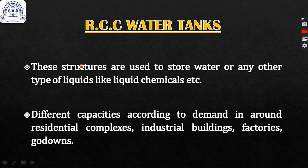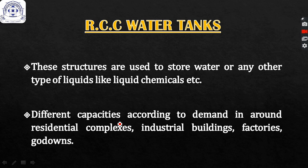Water tanks or liquid retaining structures can be of different materials like concrete, stone, brick, RCC, steel, or polyethylene. Water tanks can be of different capacities according to the water demand and water usage of that particular area. For example, in houses of one or two family dwellings, we generally prefer concrete tanks, brick tanks, or precast ready-made polyethylene tanks.